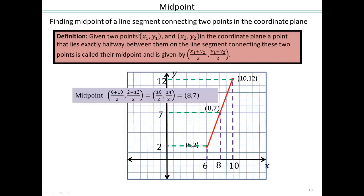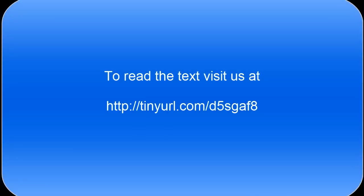So in general, if you're given two points, x1, y1, this is my first point, x2, y2, second point, to find a point that lies exactly halfway between them on the line segment connecting them would be given by this. Take the 2 x-coordinates, their average, take the 2 y-coordinates, their average.